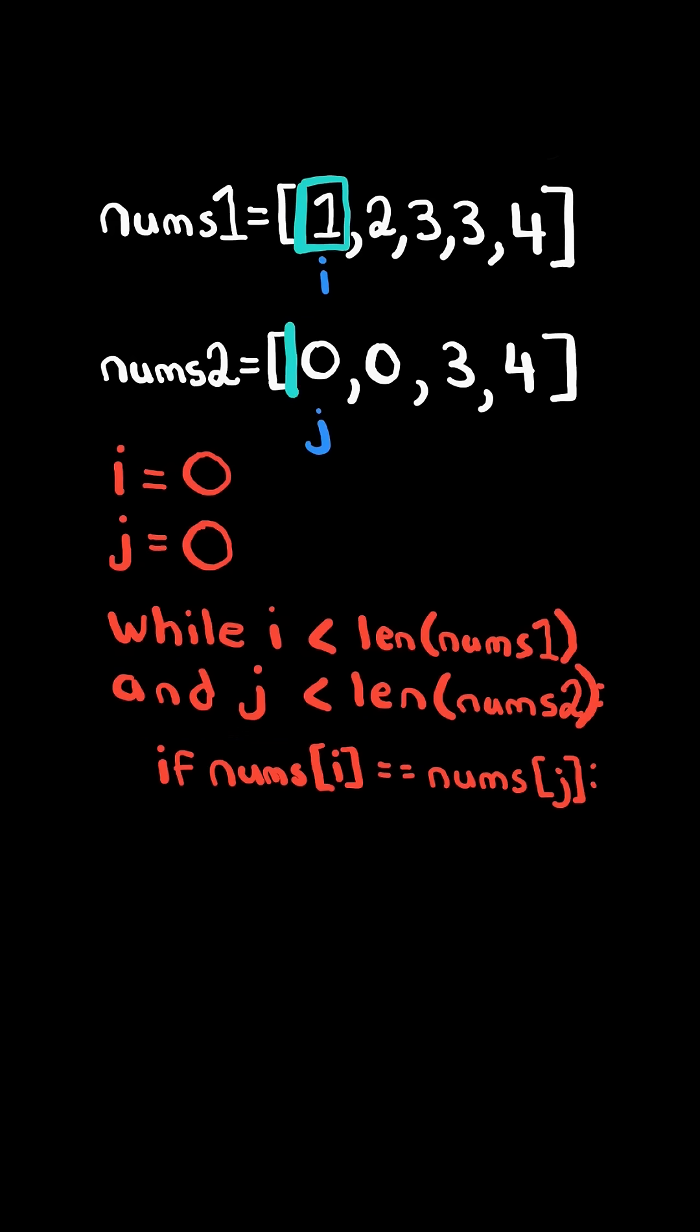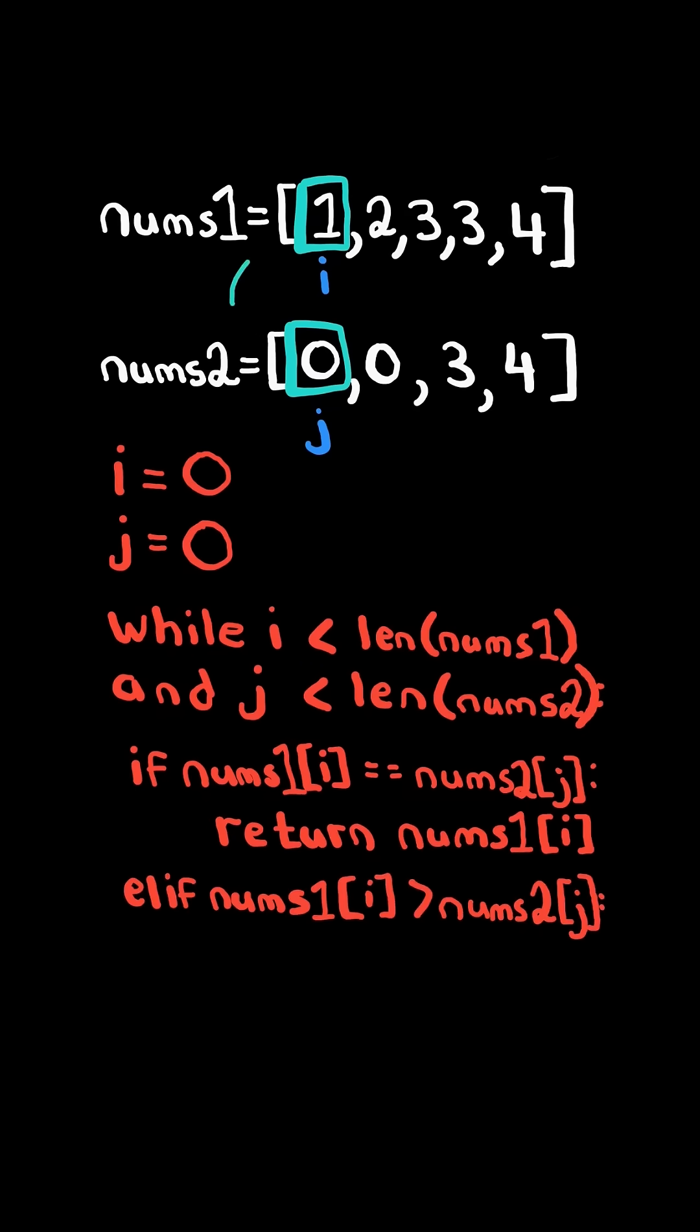If nums[i] equals nums[j], then we return that value. In this case, nums1[i] is greater than nums2[j], so we increment j.